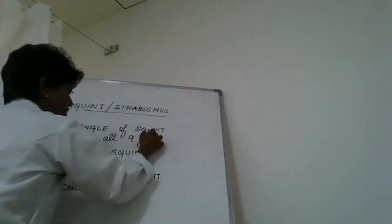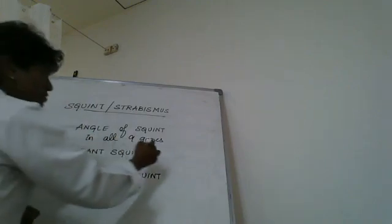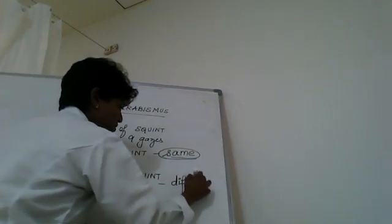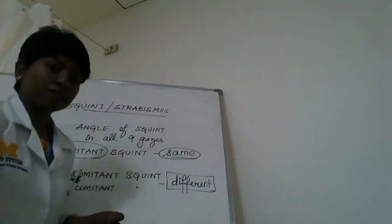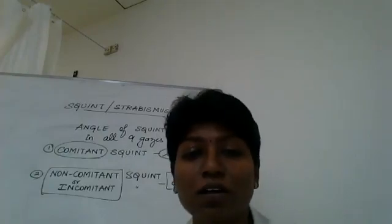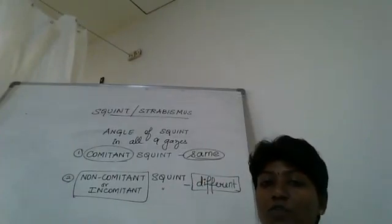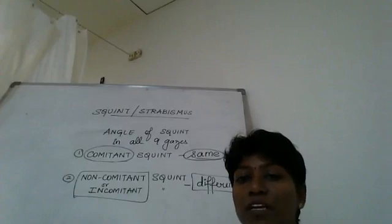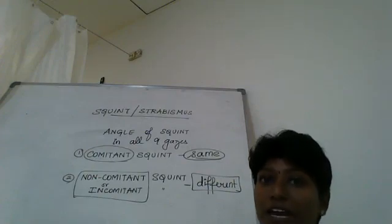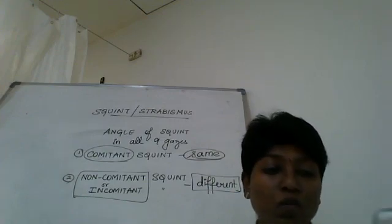When I measure the angle of squint in all nine gaze positions, if the angle is the same in all nine cases, it is a comitant squint. If the angle is different in different positions — say it's different in dextroversion versus levoversion — then it is a non-comitant or incomitant squint. So depending on whether the angle is the same or different across the nine positions, we call it comitant or incomitant squint.